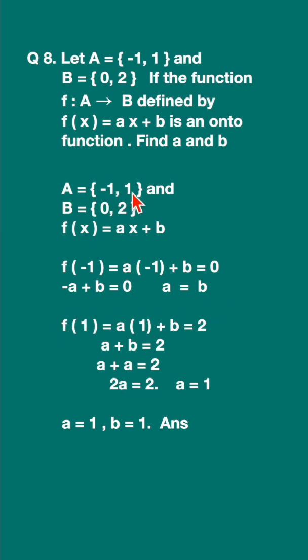Now let us find the next image. Here it is 1, the next element of A. So f(1) = a(1) + b = 2. Why 2? Because 2 is the image of 1. Simplifying, a + b = 2. In place of b, write a, so 2a = 2 and a = 1.